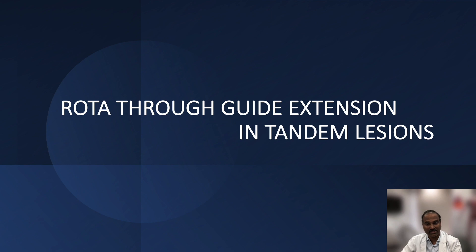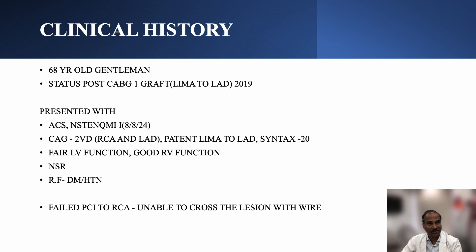The first case involves rotablation done through guide extension for tandem lesions in the right coronary artery. This is a 68-year-old male, post-CABG status with LIMA to LAD done. He now presented with ACS with NSTEMI. CAG showed two vessel disease, LIMA to LAD was patent, syntax score was 20, fair LV and RV function, normal sinus rhythm, diabetic and hypertensive.